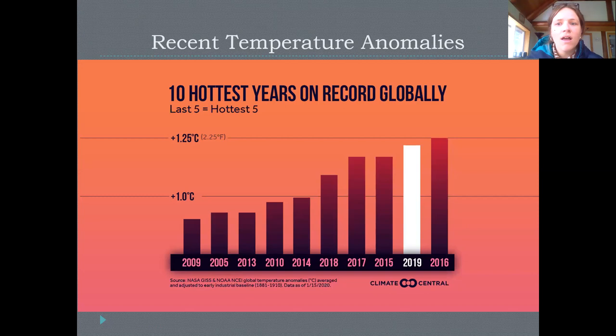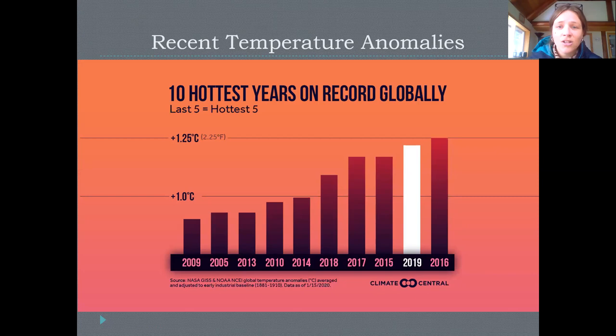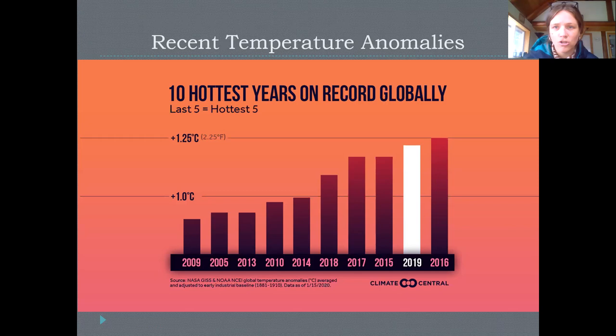Another way to envision this: we started globally recording temperature in a systematic way in the late 1800s, so we have about 140 years of data. Of all those years recorded, the hottest ten years were 2016, 2019, 2015, 2017, 2018, 2014, 2010, 2013, 2005, and 2009 — all within the last 15 years. We have a very pronounced warmer condition than we have seen in the modern industrial era and over human history.